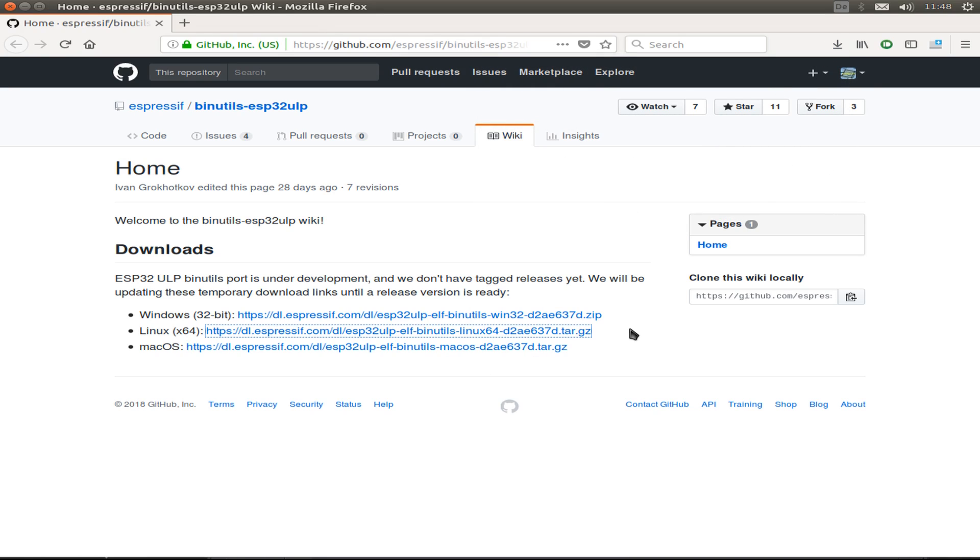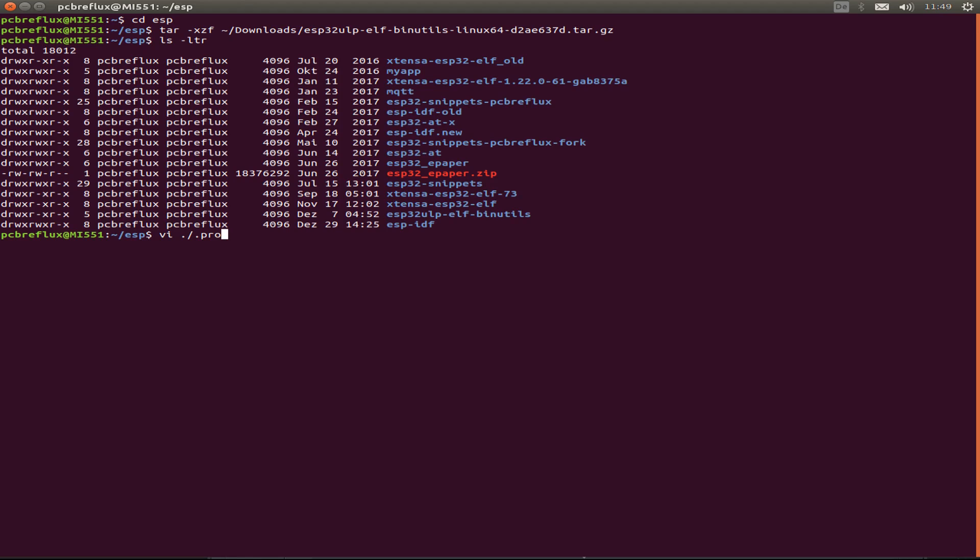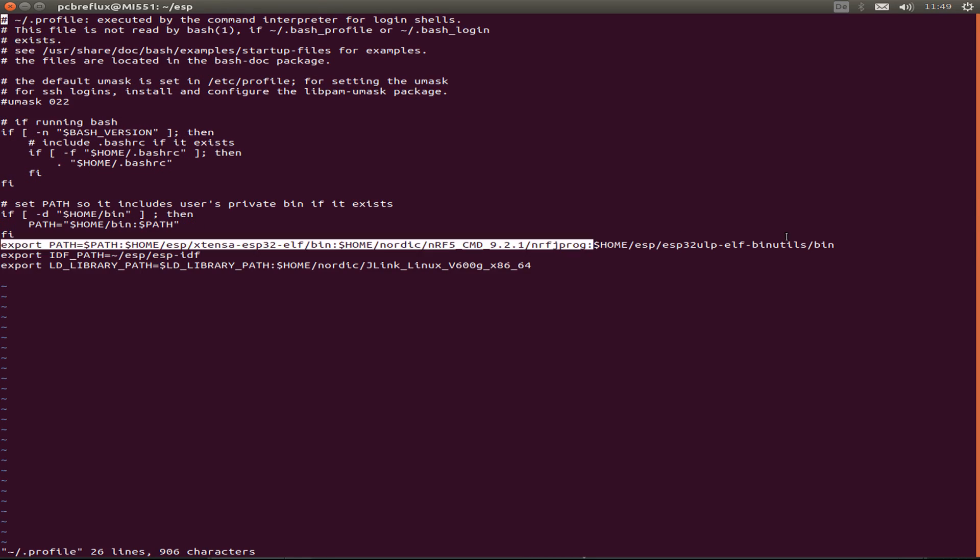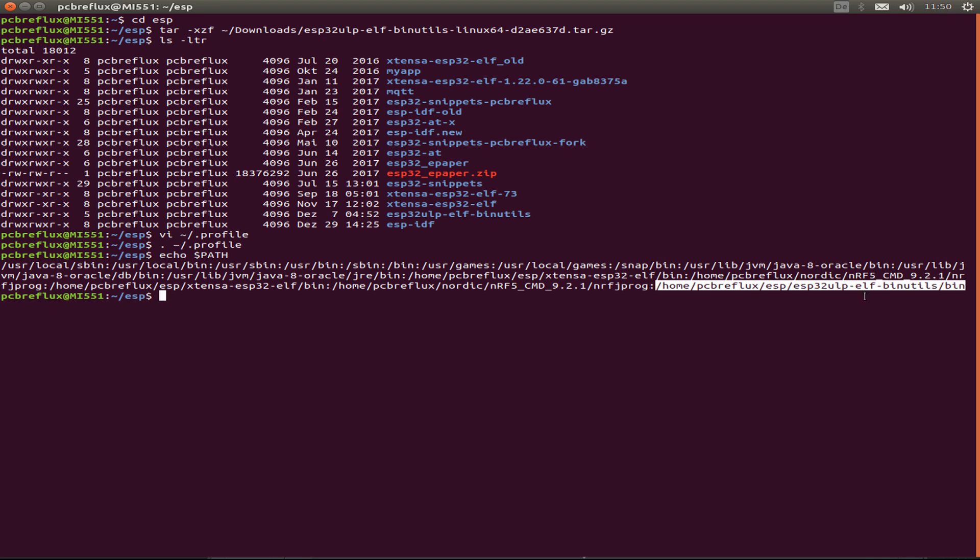I download the Linux 64-bit version from here and then install it into my Ubuntu system. So after downloading, I extract the gzip file to wherever I want and then add the path into my path variable. And then we can start compiling our ESP32 example.